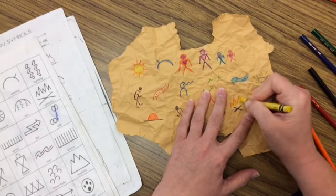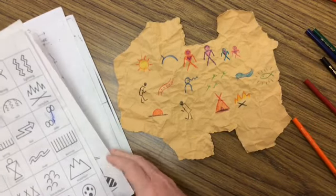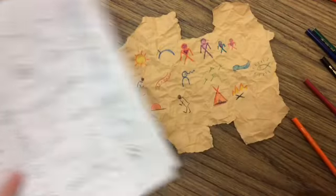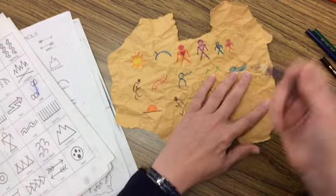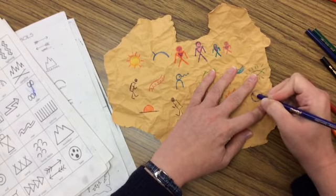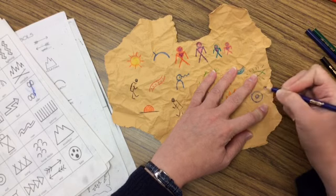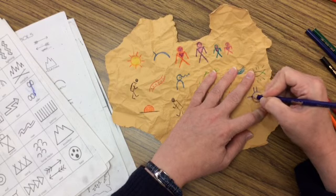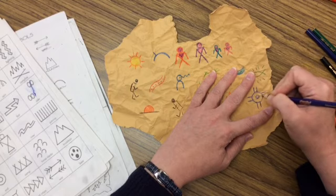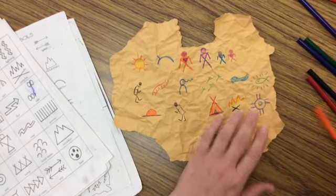I think this seems like a pretty happy story. They're all home, they had a nice walk, so I think I will draw the symbol for happy, which is a circle and another circle inside with lines going out.